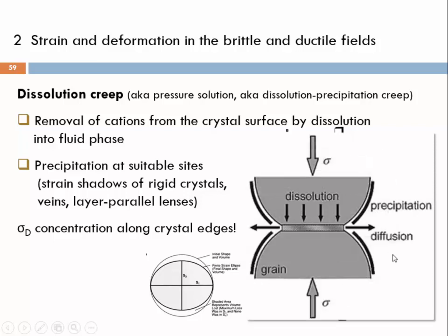We see here a different illustration from another textbook. Again, stress concentration acts on a surface that is wetted by a fluid phase. Into this fluid phase we dissolve parts of the crystals, and this fluid phase may redistribute material into locations at lower stress, which might be nearby or at any distance away from the locality at which dissolution occurs.